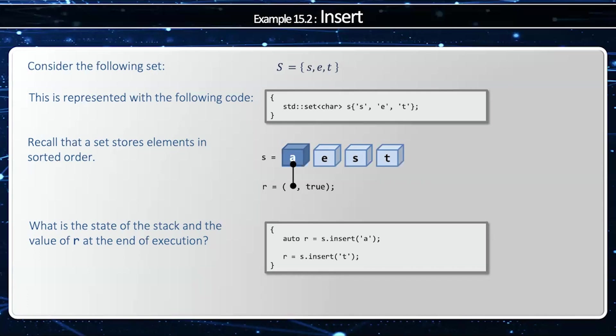Then when I say s.insert(t), well 't' already exists in the set. Remember, no duplicates. I'm going to return an iterator to that 't' and then false to indicate a new element was not inserted.